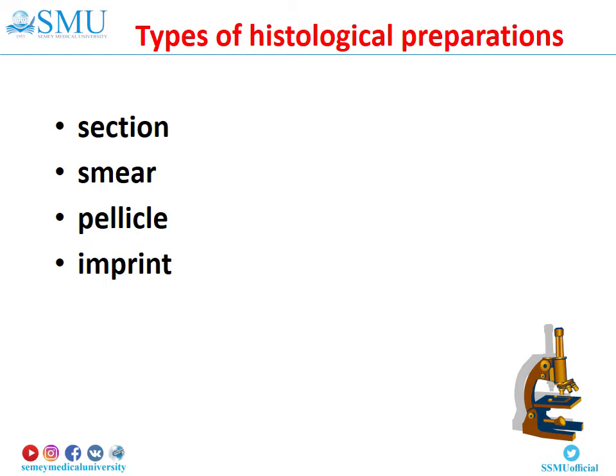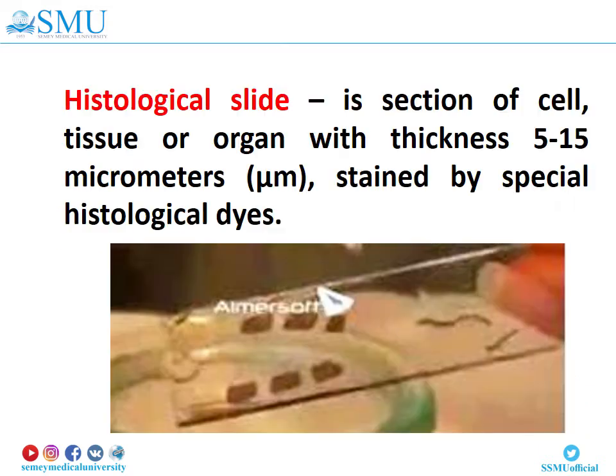A pellicle can be of pleura and peritoneum. An imprint can be of liver or thymus, for example. A histological slide is a section of cell, tissue, or organ with a thickness of 5 to 15 micrometers, stained by histological dyes.